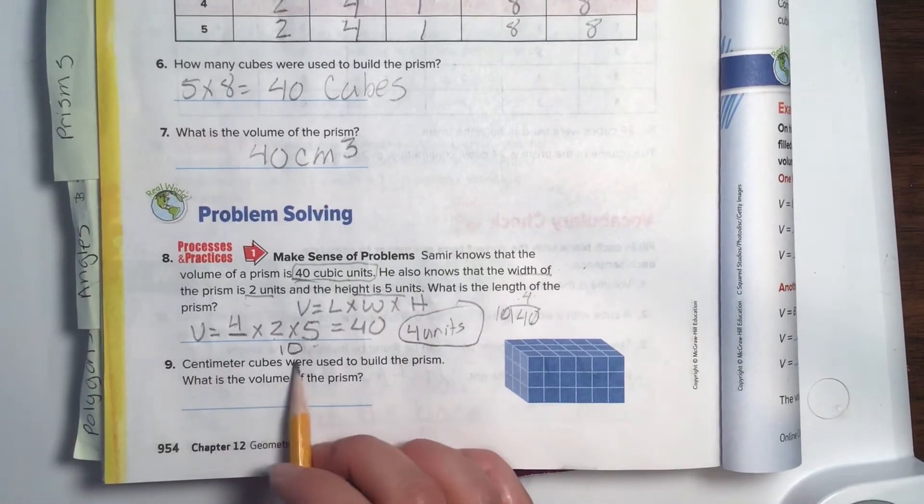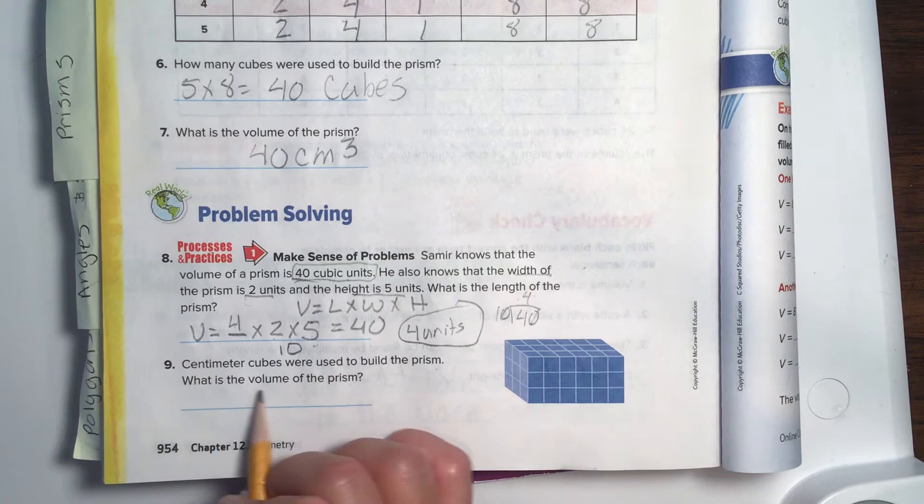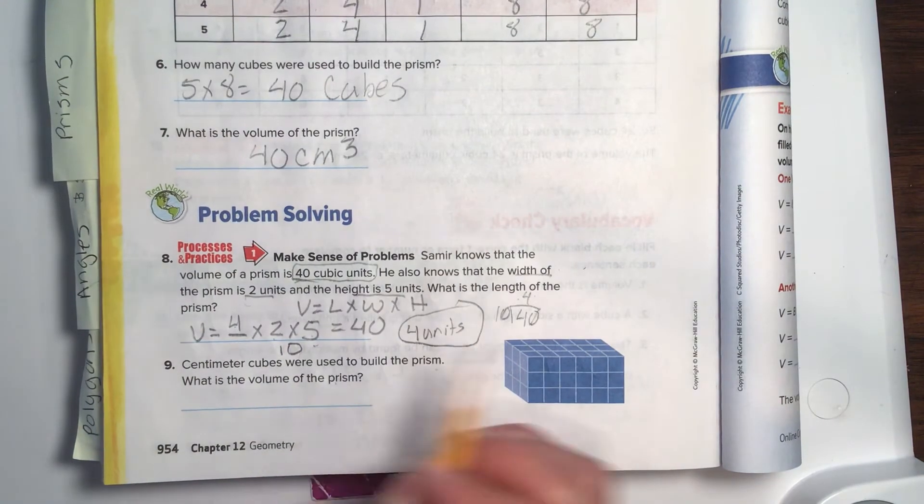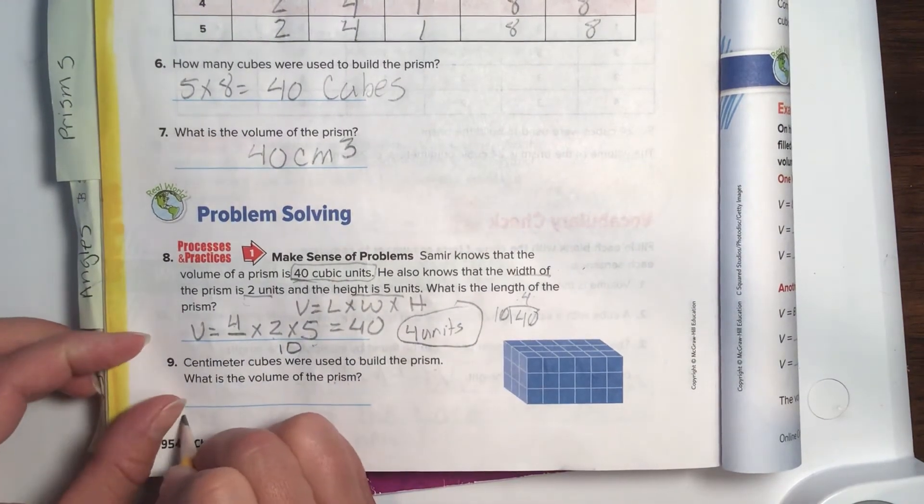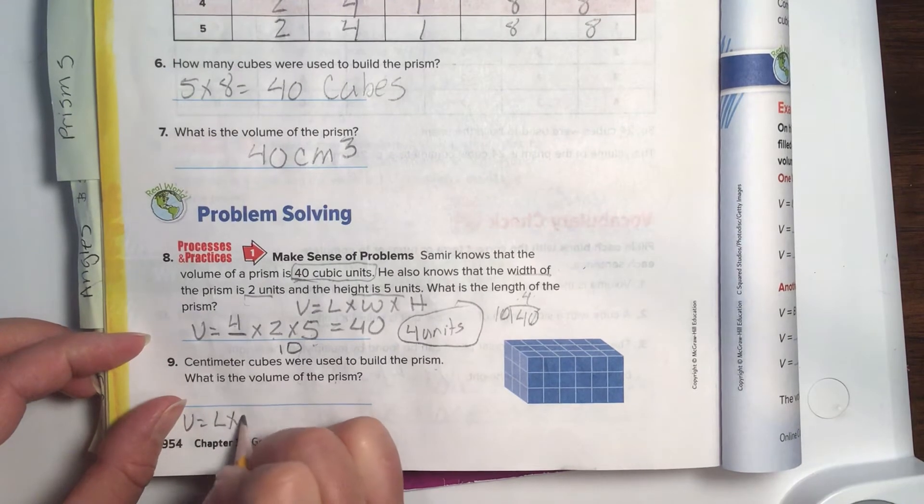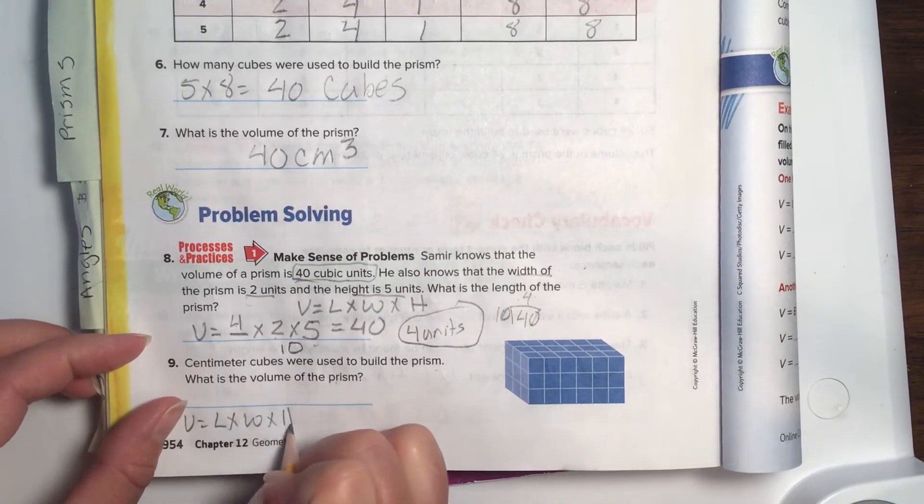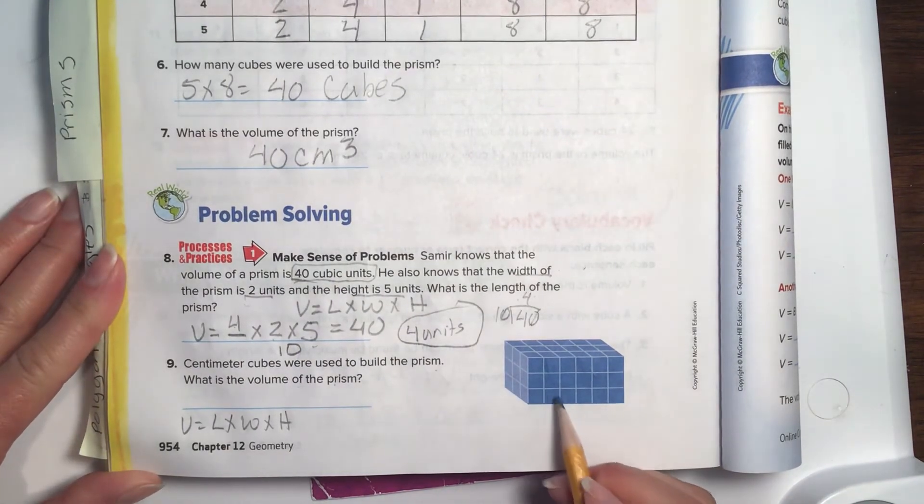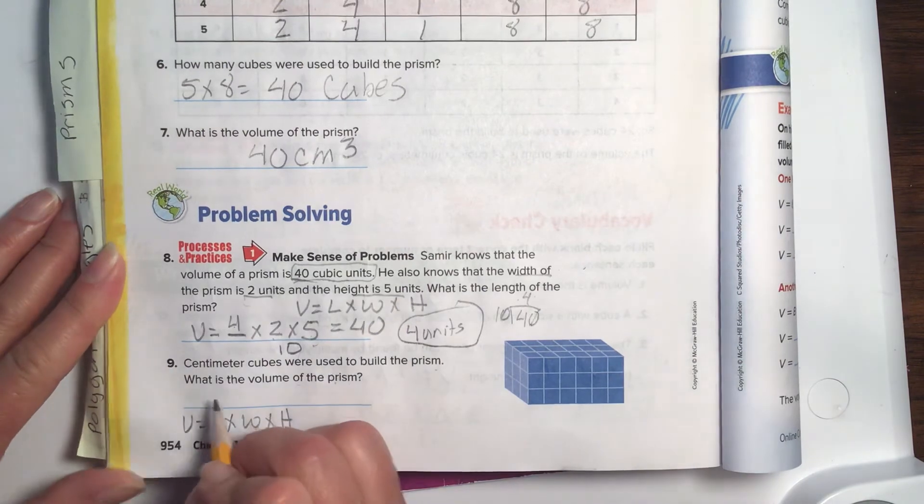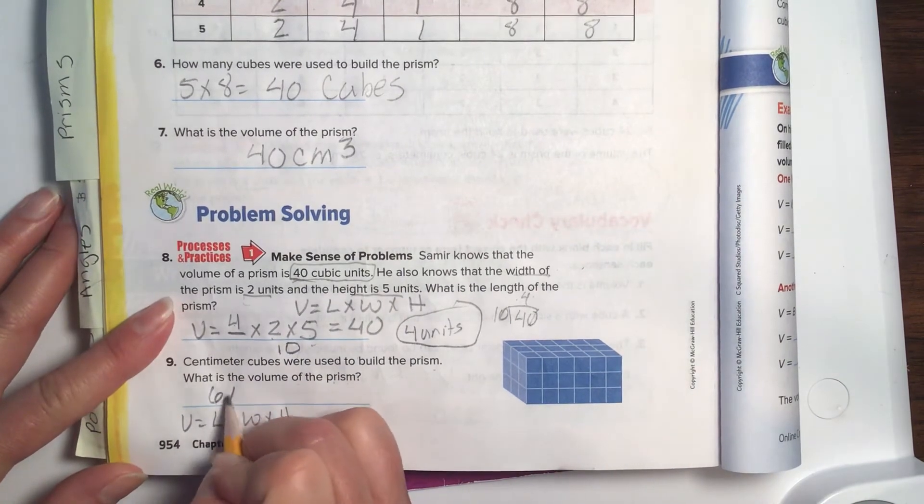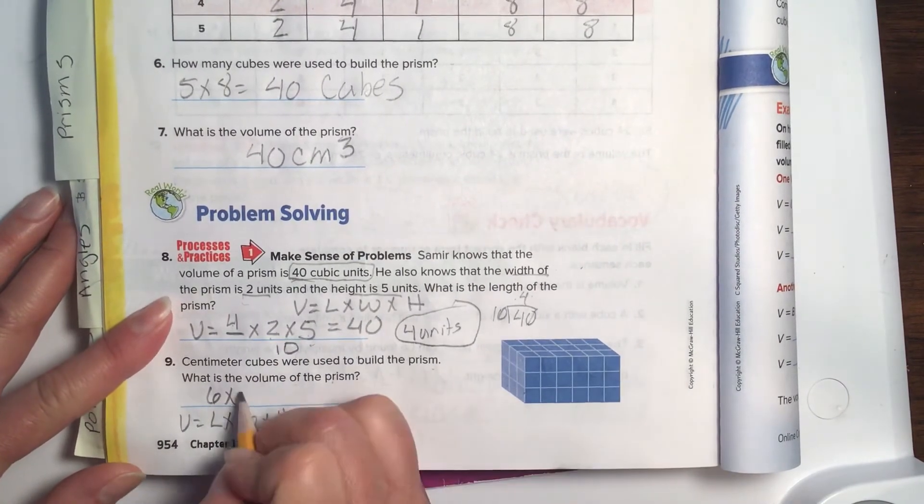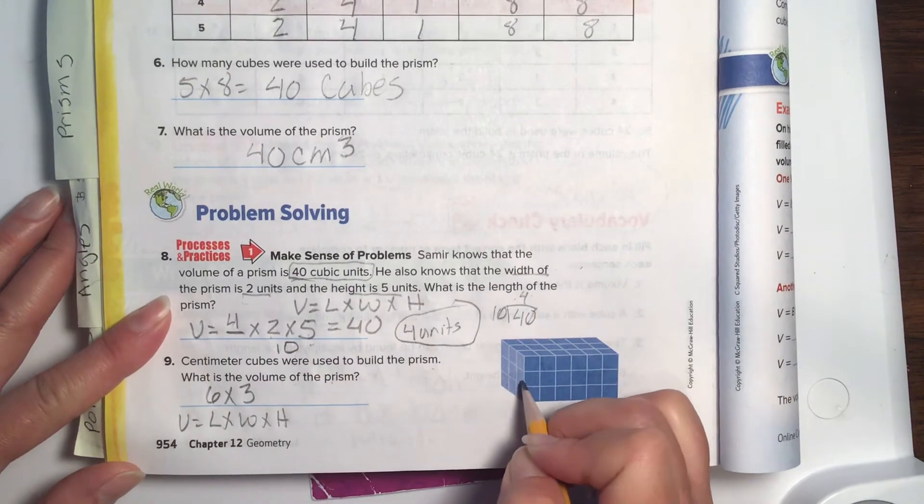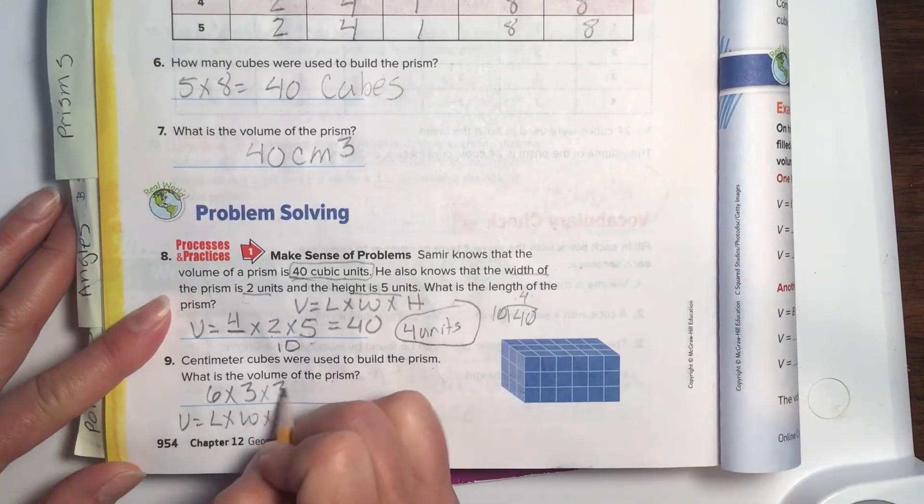Go ahead and circle that so I can find your answer easily when I look at your homework. Number nine, centimeter cubes were used to build the prism. What is the volume of the prism? Okay, so we find the volume, again, by doing length times width times height. And I like to write this out so I don't forget anything. All right, the length. 1, 2, 3, 4, what? 1, 2, 3, 4, 5, 6. Six times 1, 2, 3. And how tall is it? 1, 2, 3. Three, all right.